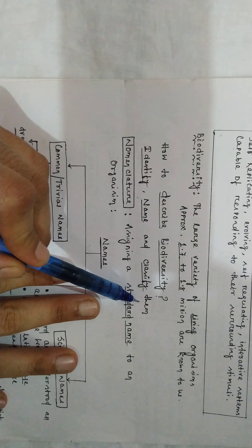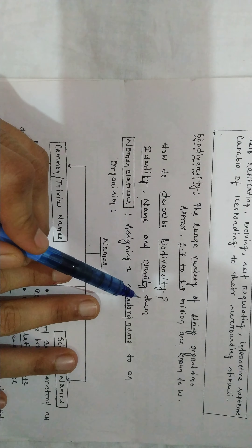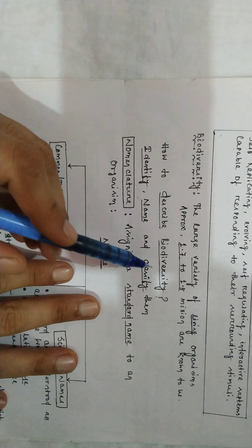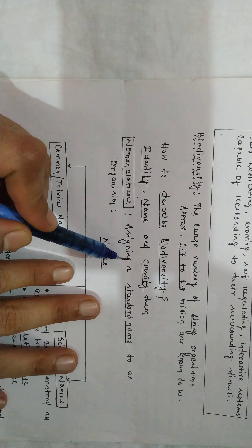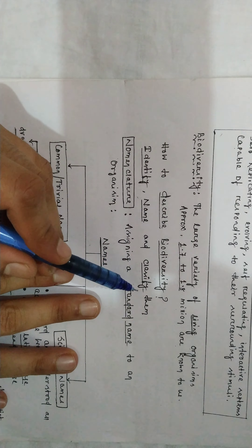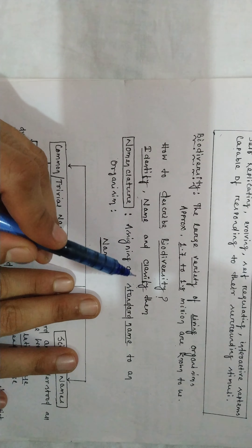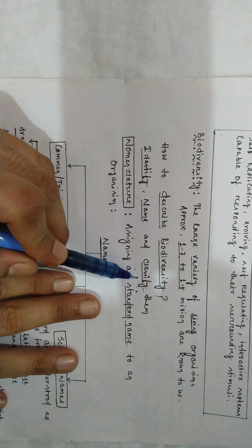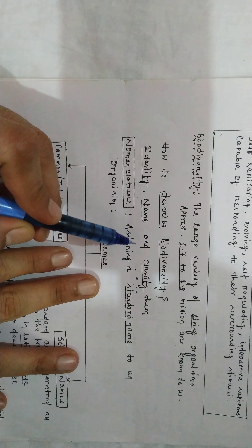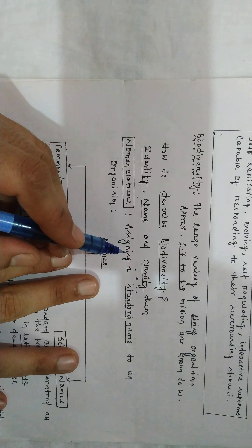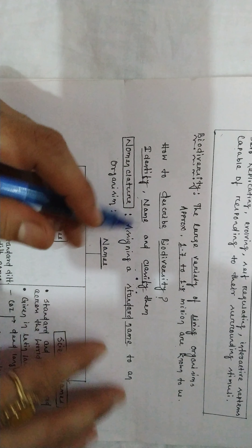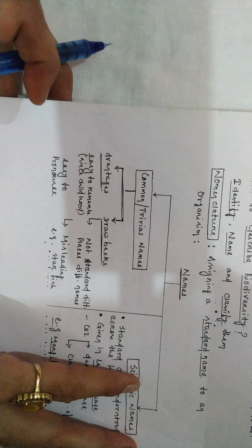How to describe biodiversity? It involves identification, naming, and classification of an organism. How to name them, how to identify them, how to classify them — classification of an organism is known as taxonomy, and naming of an organism is known as nomenclature.